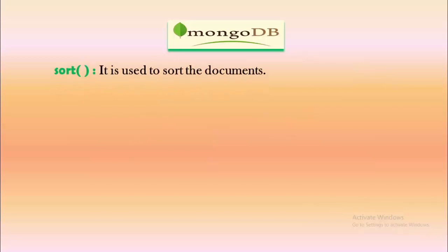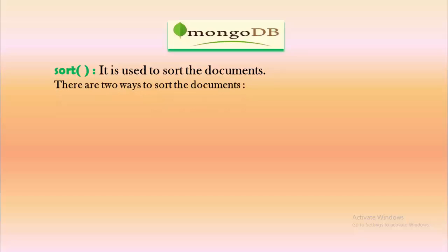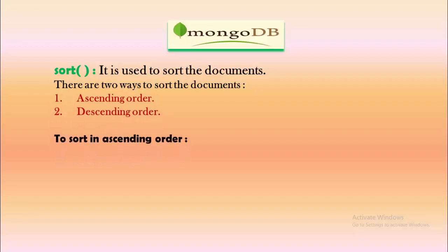We'll start with the sort function. The sort method is used to sort documents. There are two ways documents can be sorted: ascending or descending order. To sort in ascending order, the syntax is db.collectionName.find().sort(), where the sort method accepts a key. Specifying key: 1 implies the documents will be sorted in ascending order.